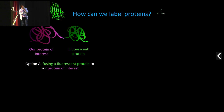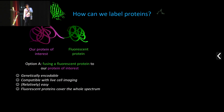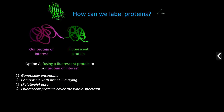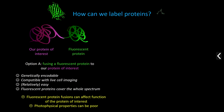The most widely used method is to take your protein of interest and make a fusion with a fluorescent protein. This works wonderfully in many cases and has many advantages: it is genetically encodable, which means you can express these fusions in living cells, do live cell imaging, it's relatively easy to do, and fluorescent proteins cover the whole spectrum and can be used for different types of microscopy.